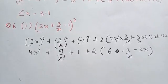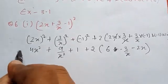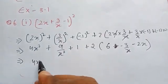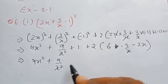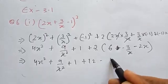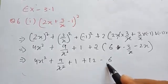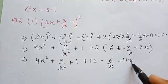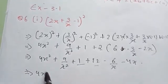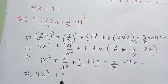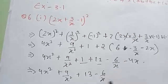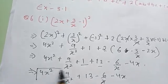Simplifying further: 4x² + 9/x² + 1 + 12 − 6/x − 4x. Combining like terms 1 and 12 gives 13. So the final answer is 4x² + 9/x² + 13 − 6/x − 4x.